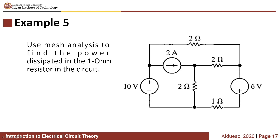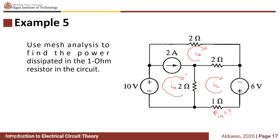For this example, use mesh analysis to find the power dissipated in the 1 Ohm resistor. First, let's assign mesh currents: mesh IA, mesh IB, and mesh IC. As you can see, this branch contains a current source between two meshes — mesh IA and mesh IB — so we have a supermesh here.